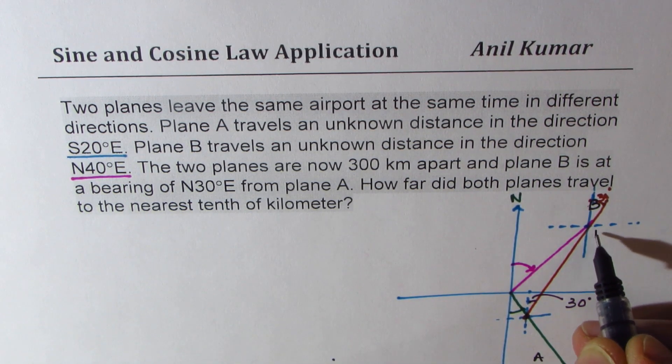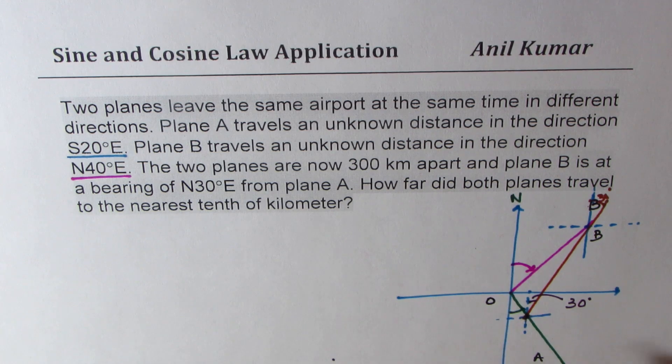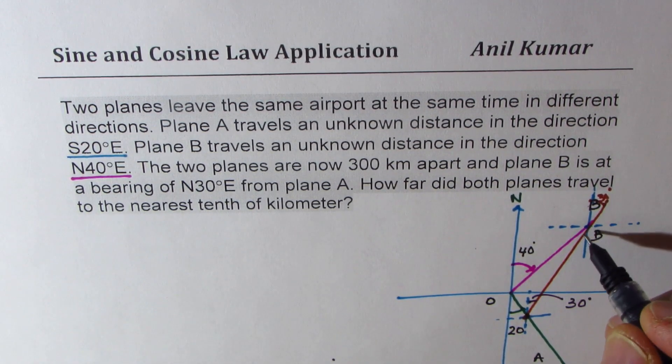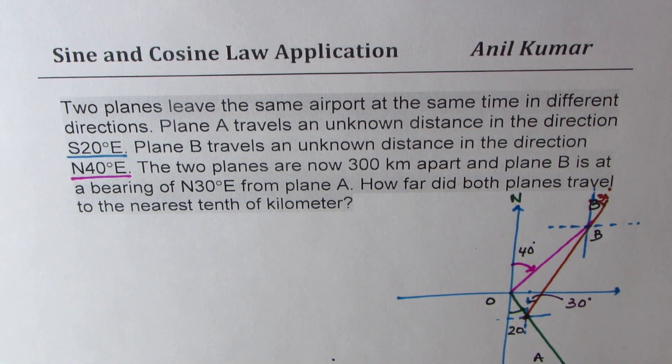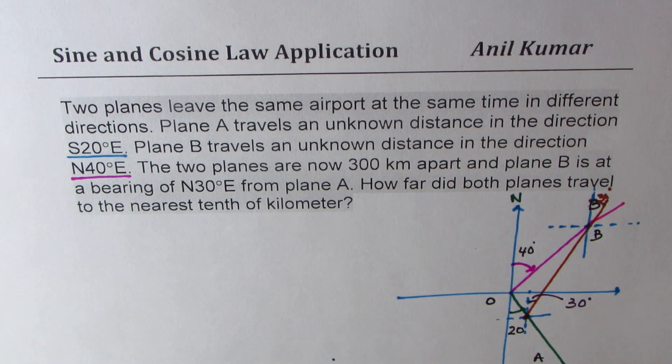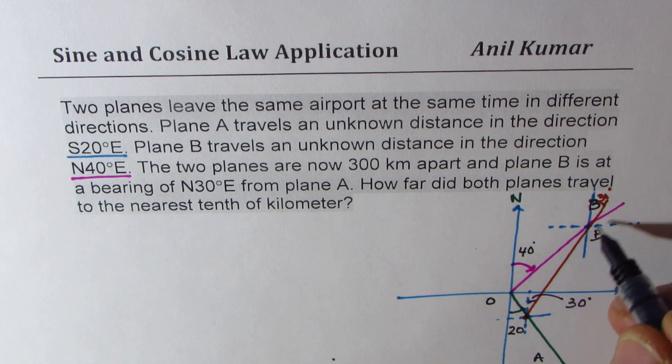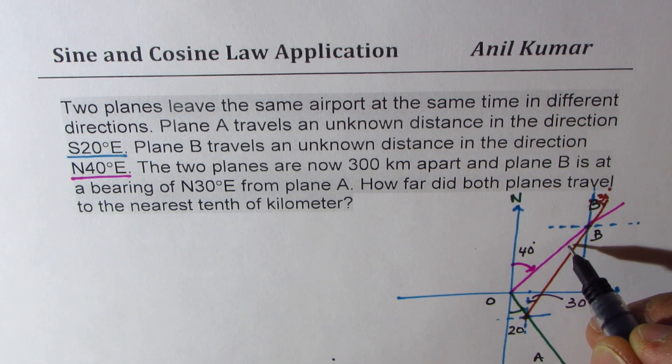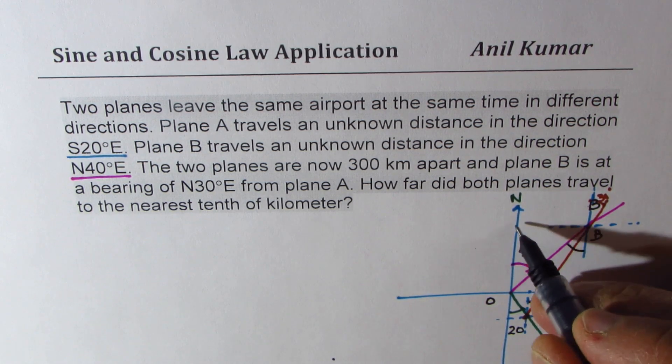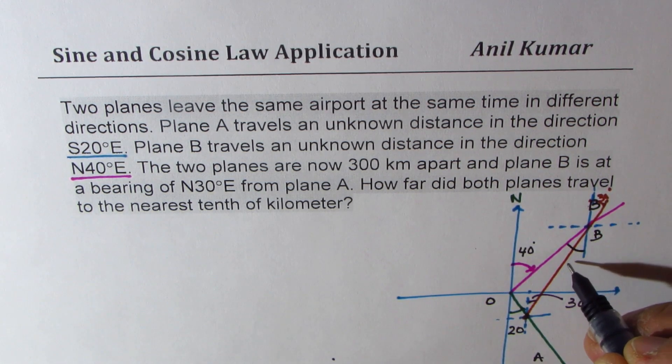So this is the point B for us. Let's call this as O, the origin. First angle for A is 20 degrees. And for B, it was 40 degrees from north. So if this is 40 degrees from north, let us extend. What we really get here is this angle. You can see the Z pattern. So this angle is 40 degrees.